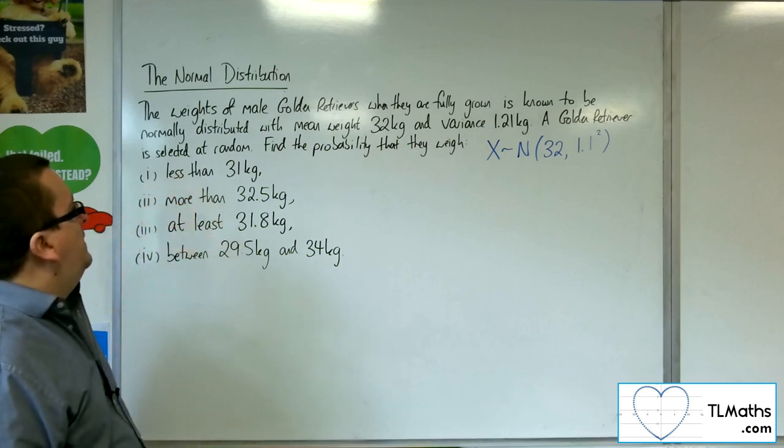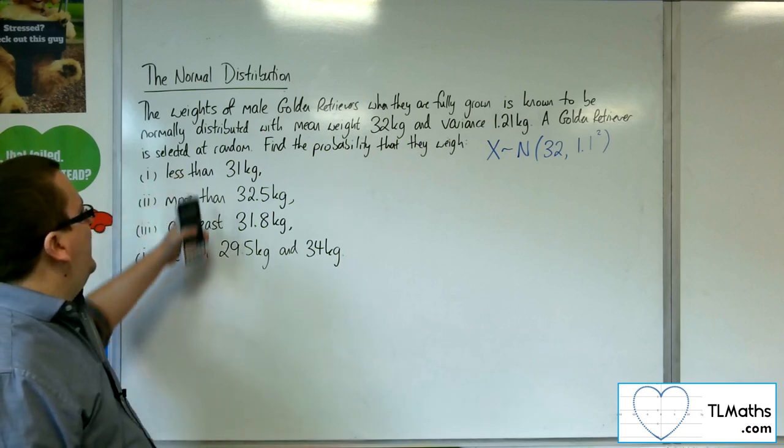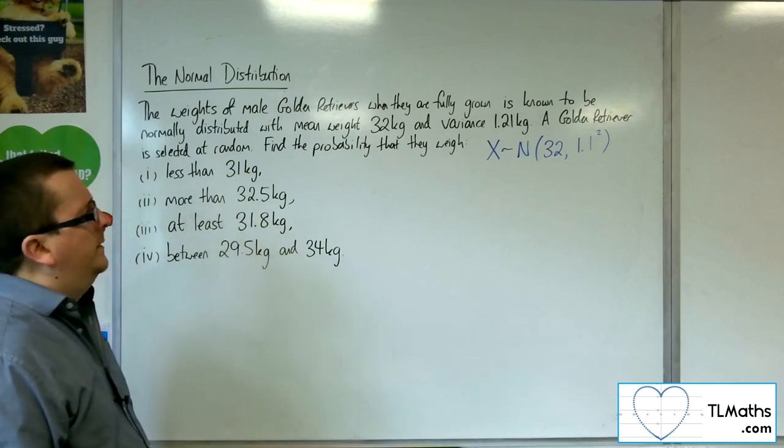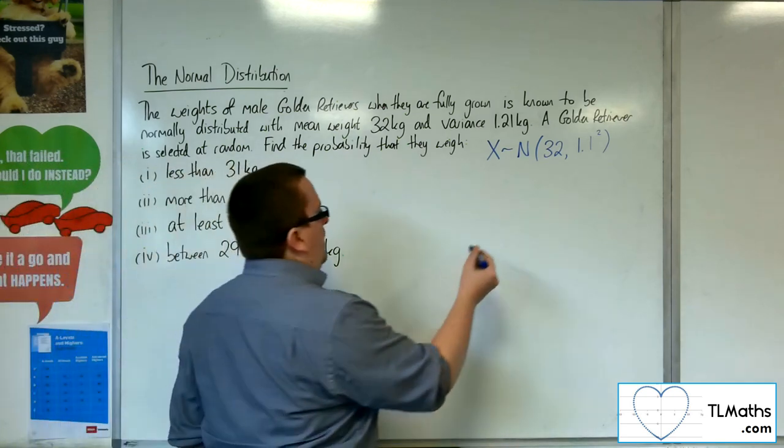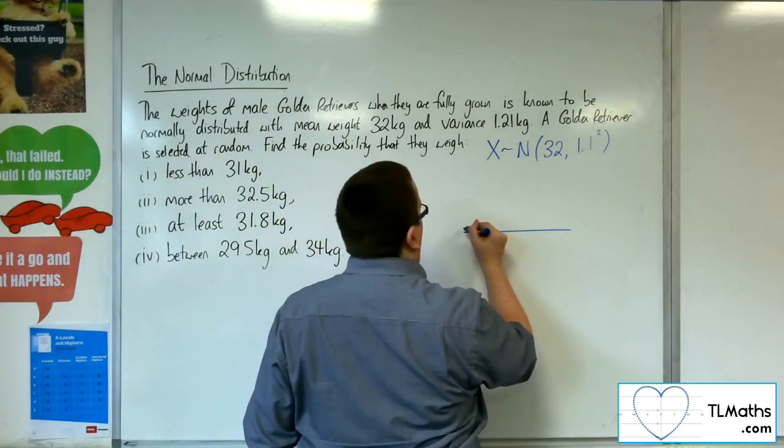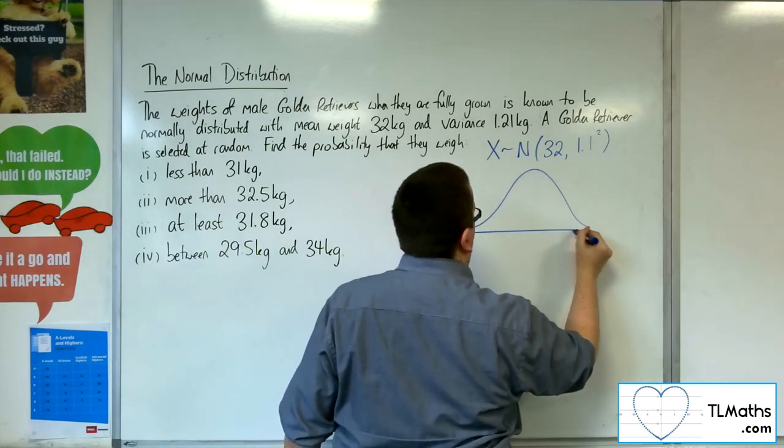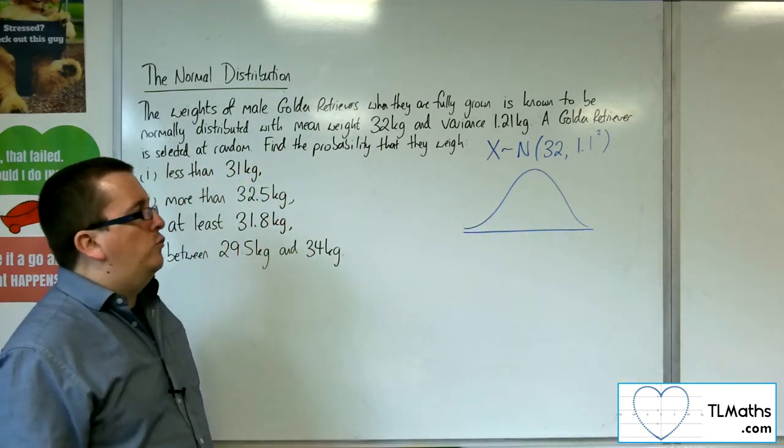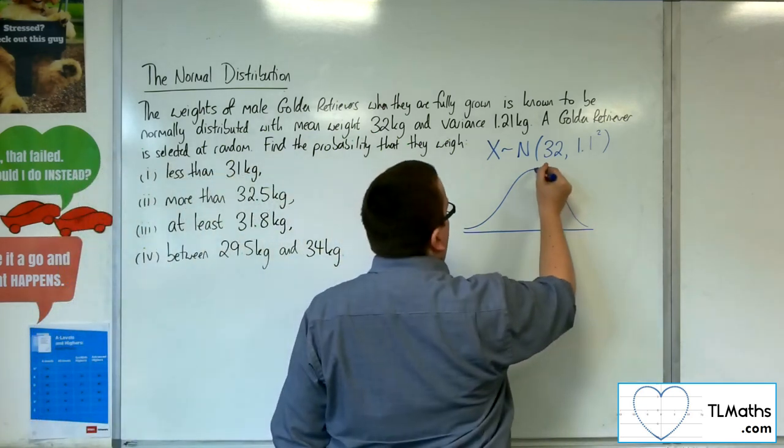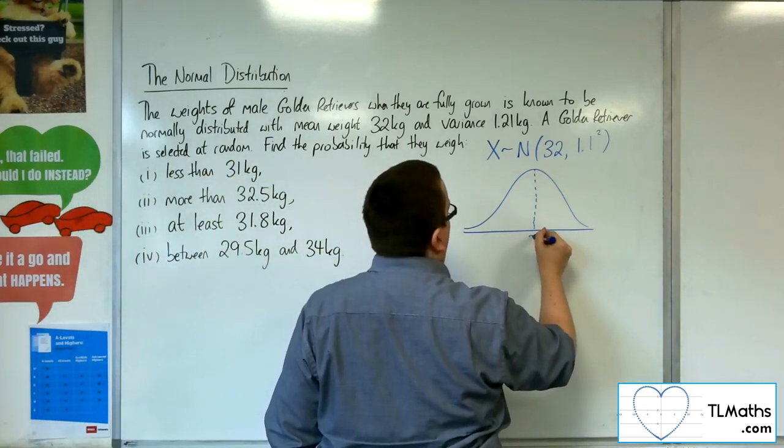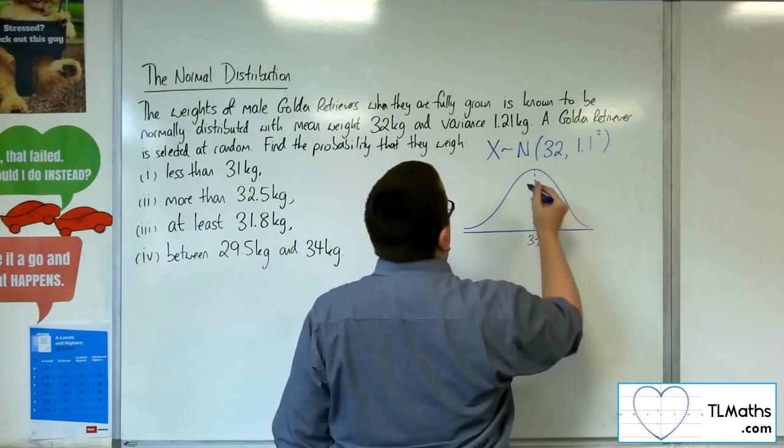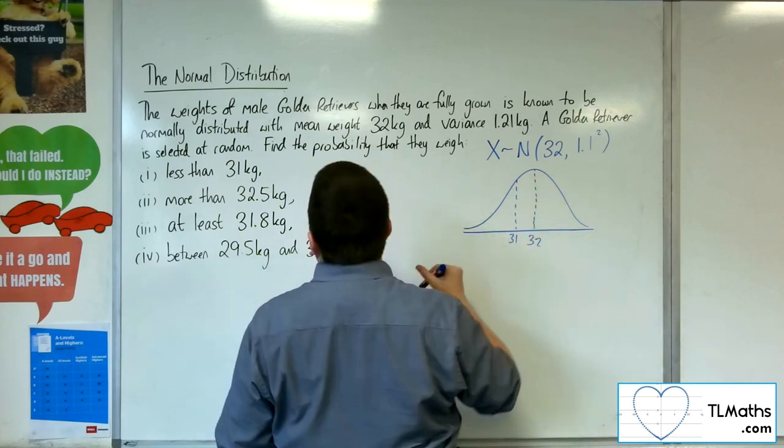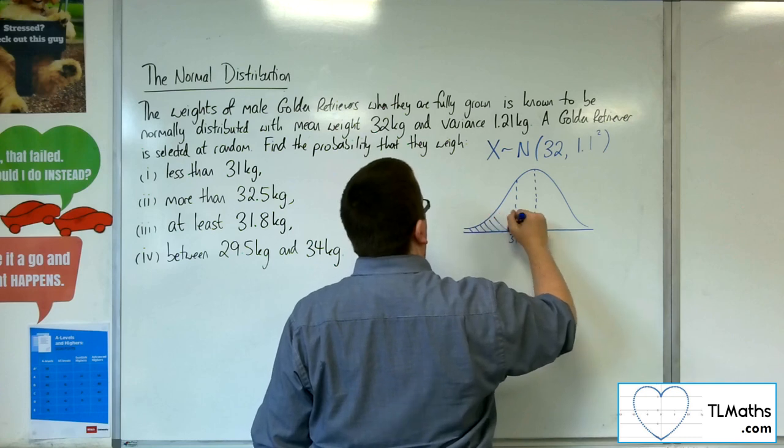Now, we want to find the probability that the dog weighs less than 31 kilos. For this first problem, I'm not going to convert these ones to Z because we just want to practice getting our calculator bits right. So I'm not going to convert all of these to Z as we did in the previous couple of videos.